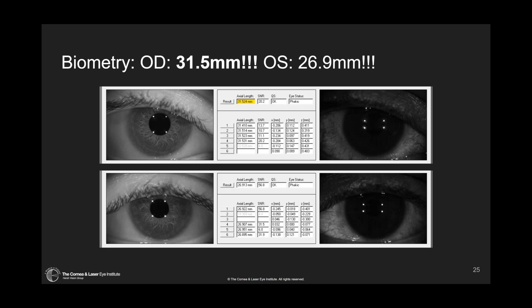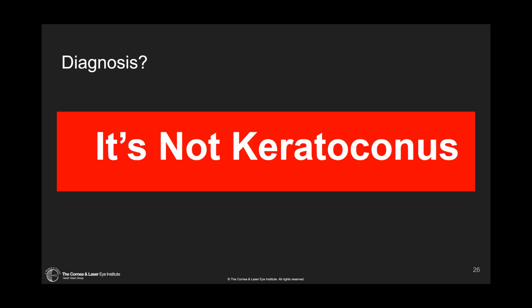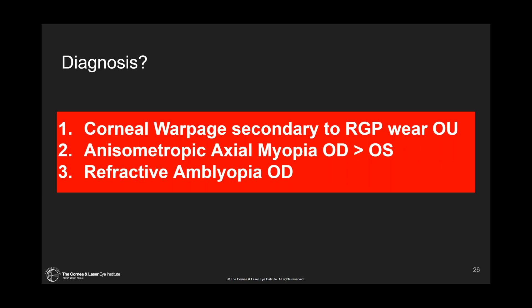We can safely rule out keratoconus. Looking at his aberrations, he does have elevated higher order aberrations on the right side compared to the left, corresponding to the warpage of the right cornea. Optical biometry reveals an axial length of 31.5 millimeters in the right eye versus 26.9 millimeters in the left — explaining his massive anisometropia. Our diagnosis: corneal warpage secondary to corneal gas permeable wear, anisometropia due to axial length difference, and refractive amblyopia in the right eye. Not keratoconus.